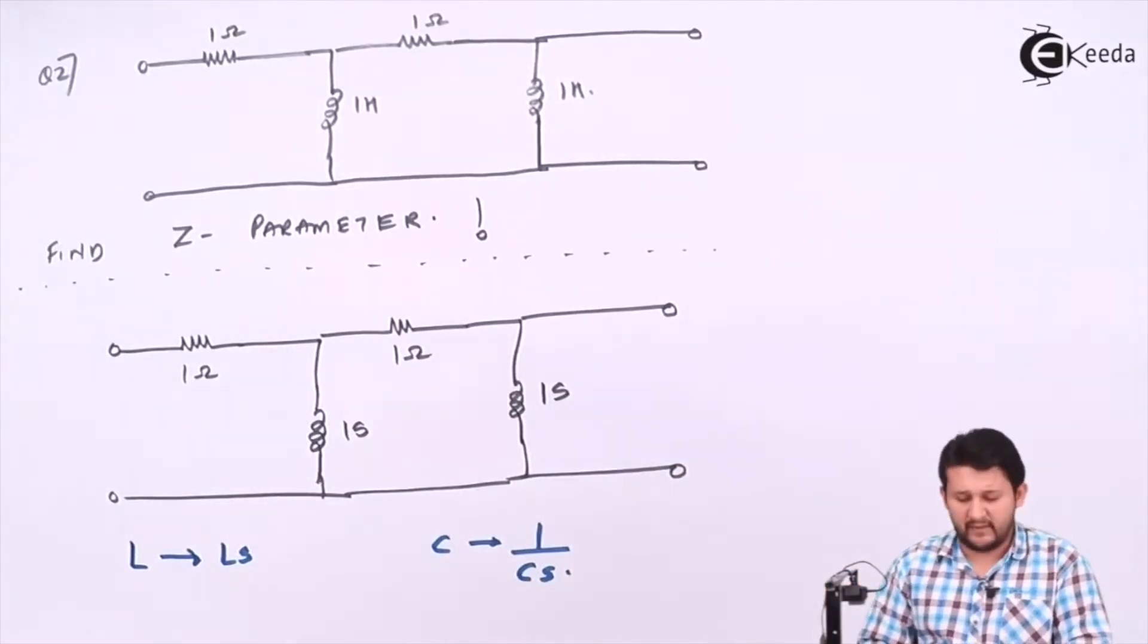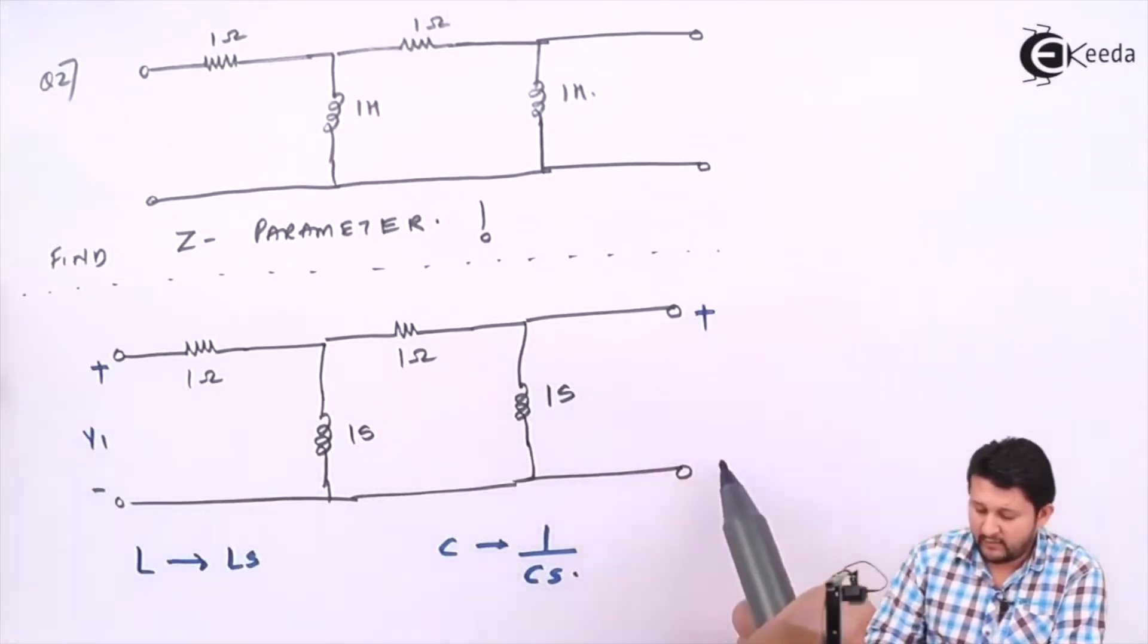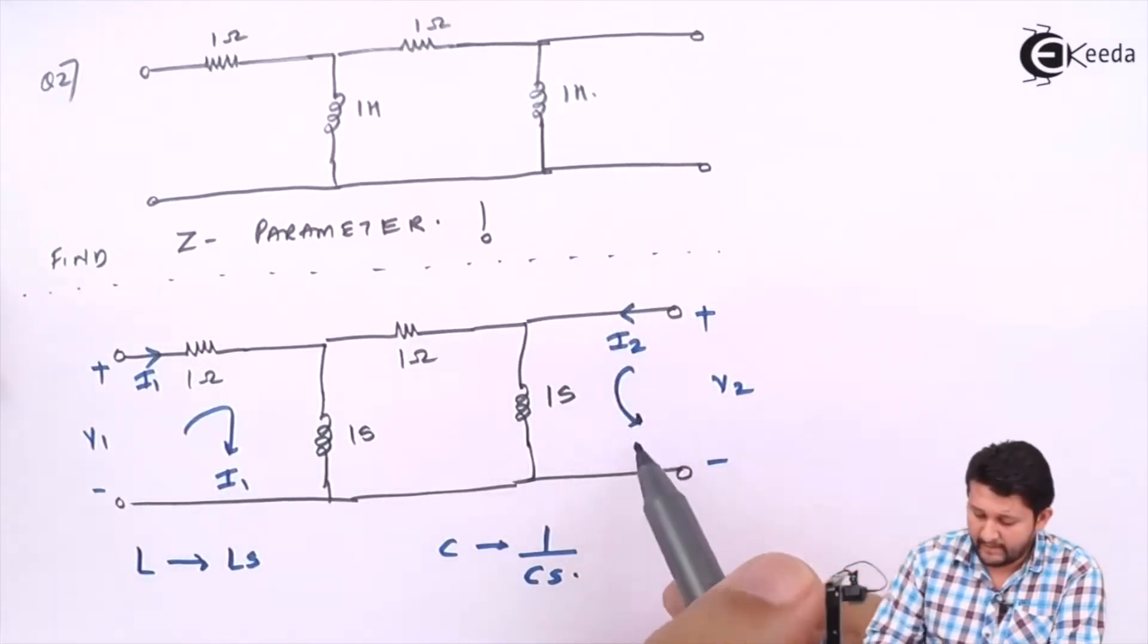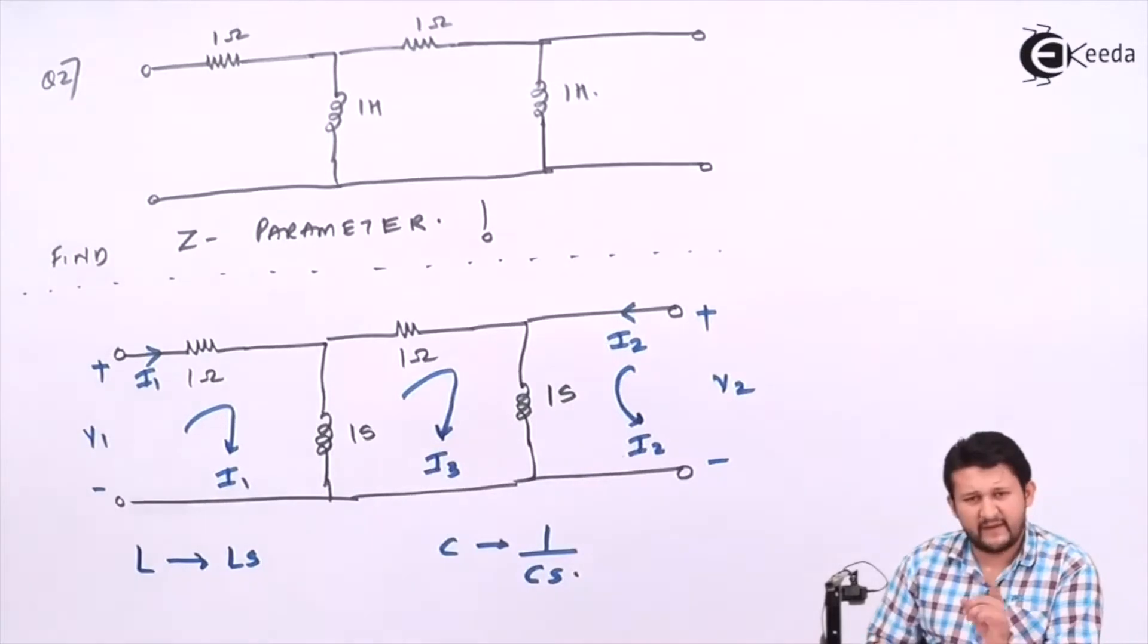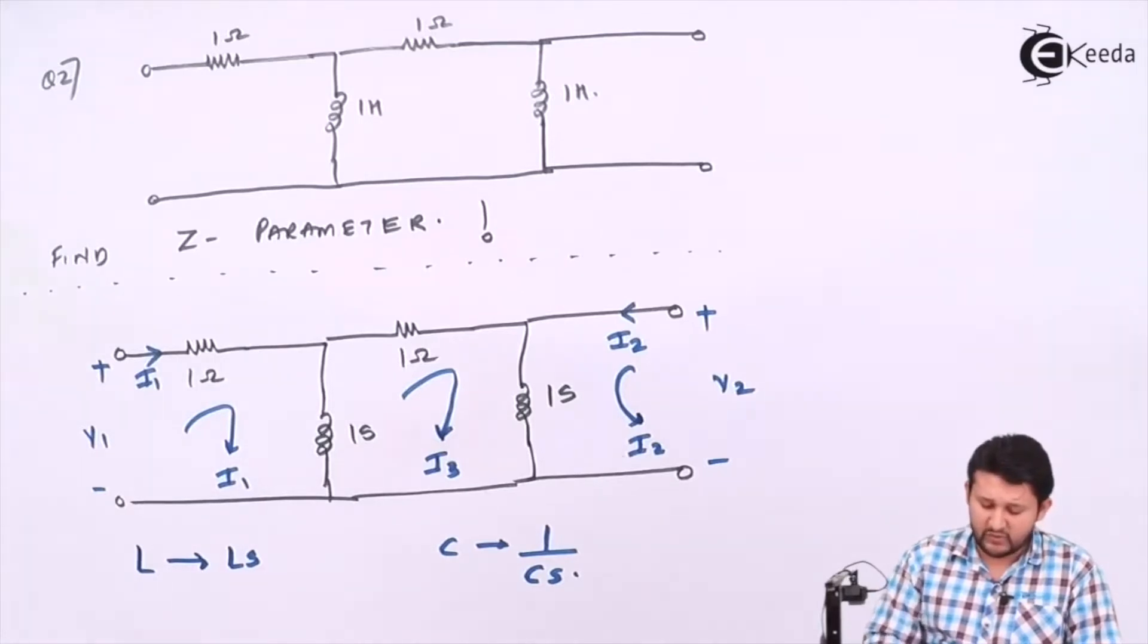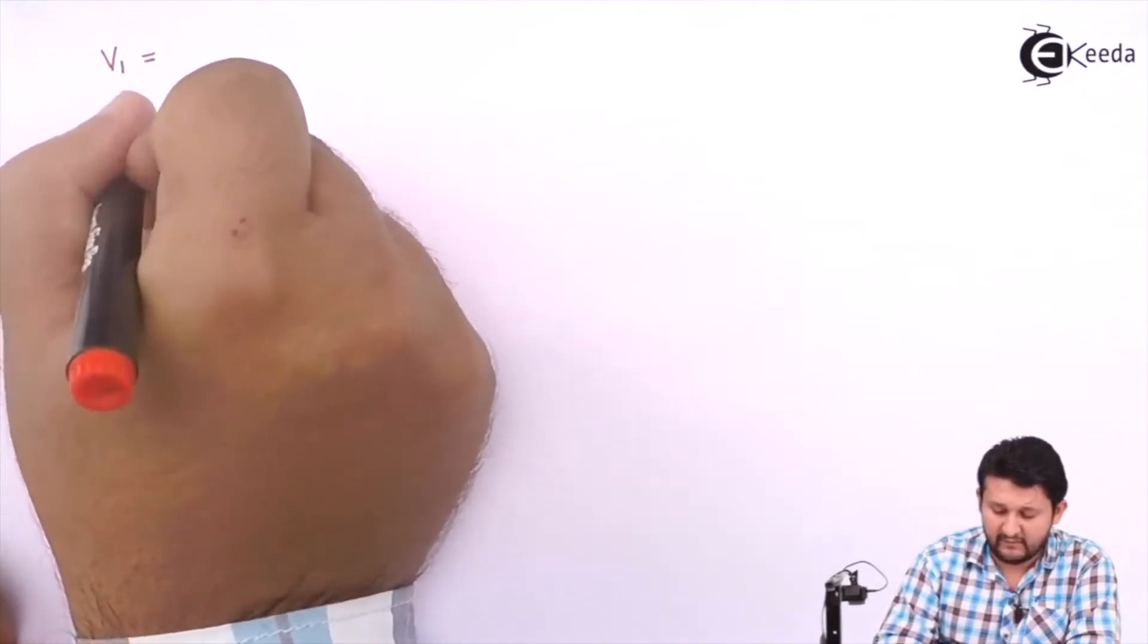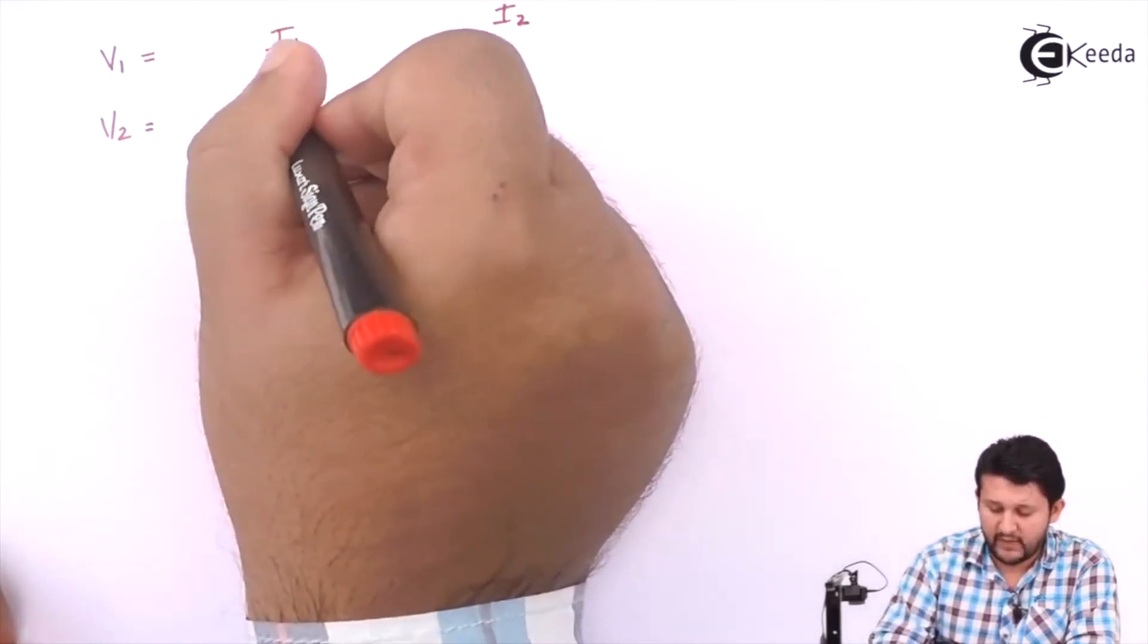So let's find Z parameters. I have two ports: input plus-minus V1, output plus-minus V2, input current I1, output current I2, and a middle node where I'll be taking a current which will be a clockwise mesh current as we studied in mesh analysis. I need to obtain my Z parameter. So my Z parameter equation—let's see if you guys remember. I hope you guys have revised sum number one.